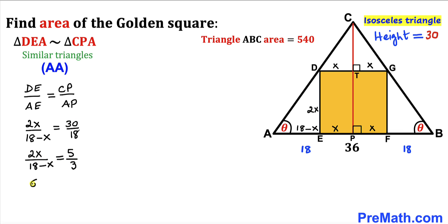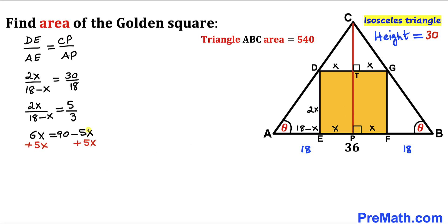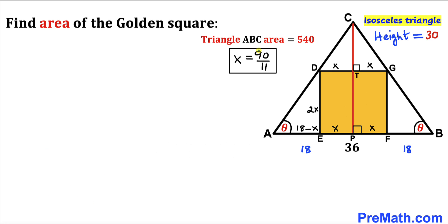Cross-multiplying gives us 6x equals 90 minus 5x. Adding 5x to both sides: 11x equals 90. Dividing both sides by 11, our x value turns out to be 90 divided by 11 units.